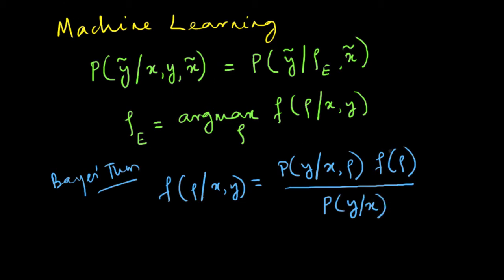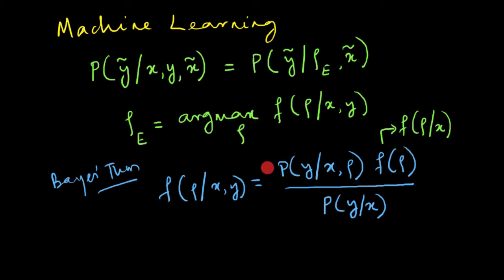Note that strictly speaking this should be equal to the distribution of rho given x, but that is exactly equal to f of rho, so we don't really worry about it. When we want to maximize this quantity, the denominator plays no role because it doesn't depend on rho, so we can throw it out. In maximum likelihood estimation, we assume we have no prior information about f of rho and throw it out as well. The difference between MLE and MAP — maximum a posteriori estimate — is that in MAP we do not throw f of rho out.